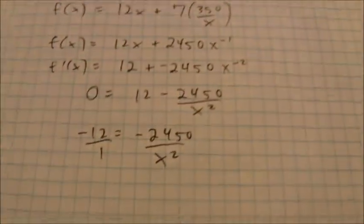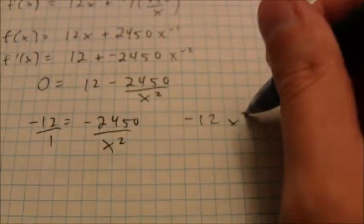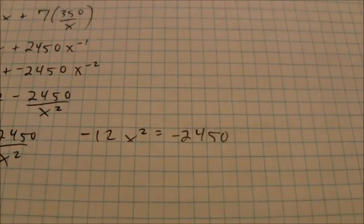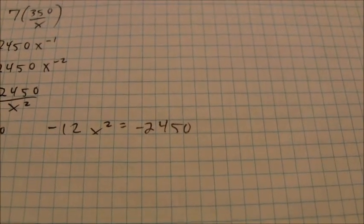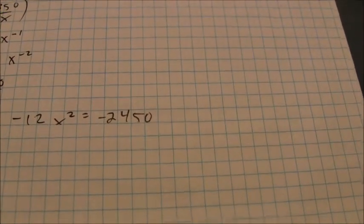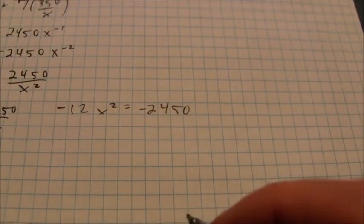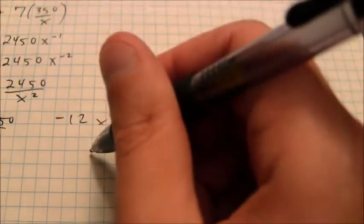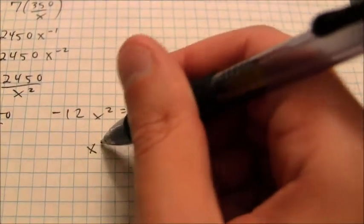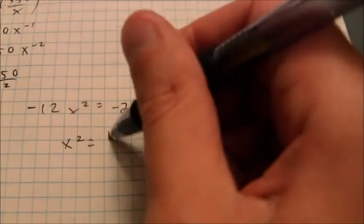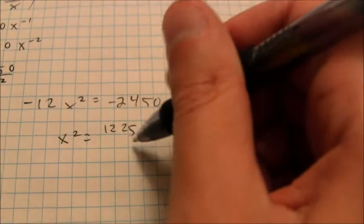And I think at this point I'll go ahead and cross multiply. So, I get negative 12 x squared equals negative 2450. I divide negative 2450 by 12, I end up getting 204 and a sixth. So, let's see here. So, x squared is equal to 1225 sixths.